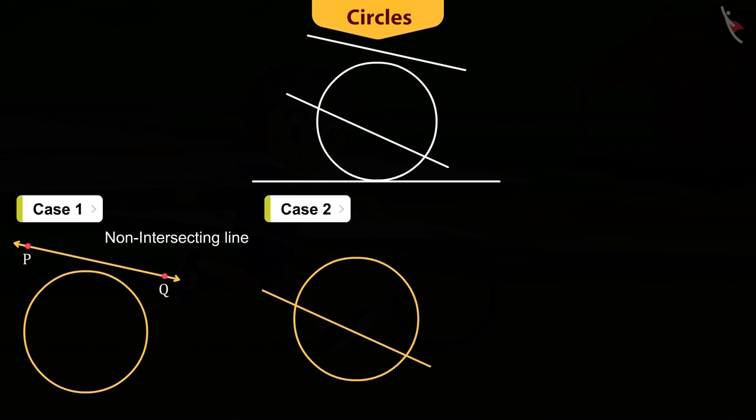In the second case, a line, say RS, intersects the circle at two points that is M and N. In such case, we call the line RS secant of the circle.